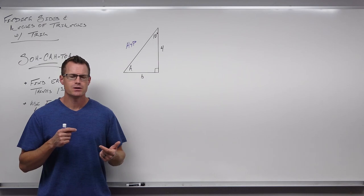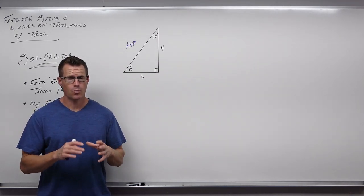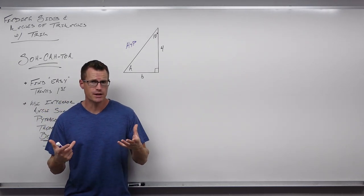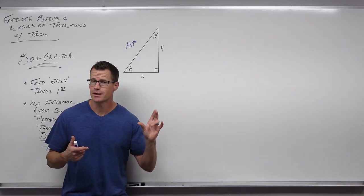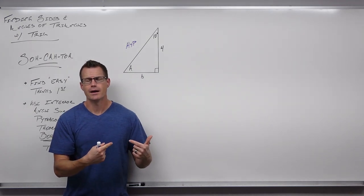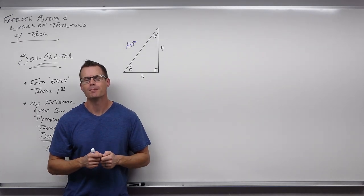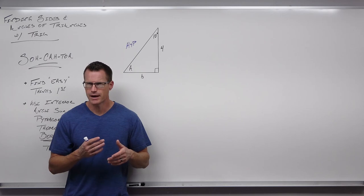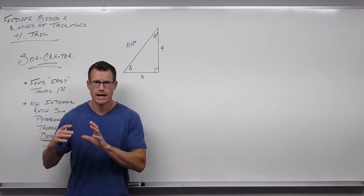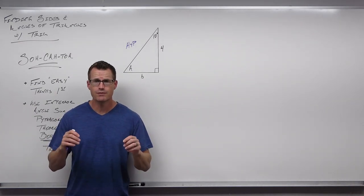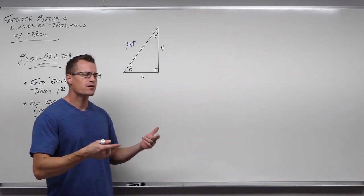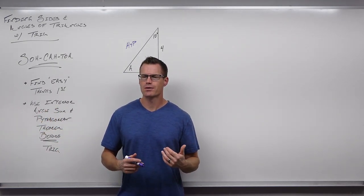The reason to avoid jumping straight into trig is that trigonometry often gives you an approximation. We do not want to use those approximations in finding more measurements unless we absolutely have to. When you round a number and then use that rounded number in other functions, you're going to round it again — you're compounding error. Pythagorean theorem gives you an exact answer every time as a square root, and interior angle sum gives you an exact angle. So it's really in our benefit to use those first.